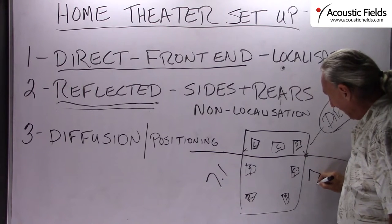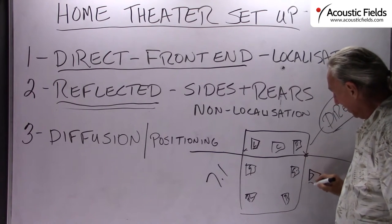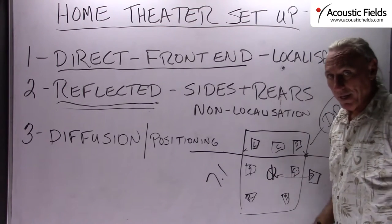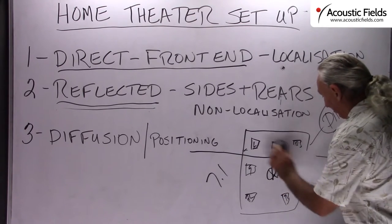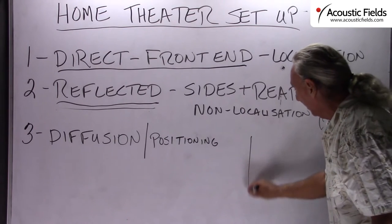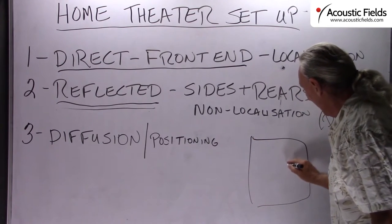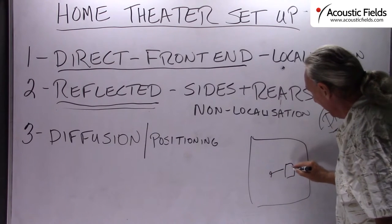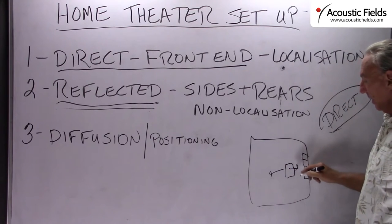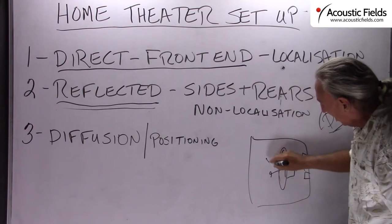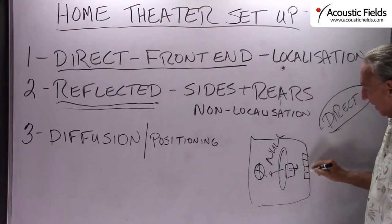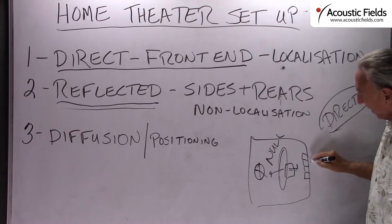You see a lot of people will take their side channels and they'll fire right at the listening position. I have a better idea. Let's take our side channels — instead of firing direct this way, let's fire them this way, but only into a wall of diffusion. This gives us a null here, because the back of the speaker is facing the listening position, and then we're firing our side wall channels into a diffuser.